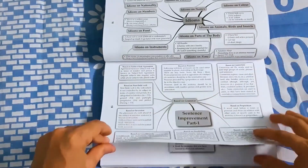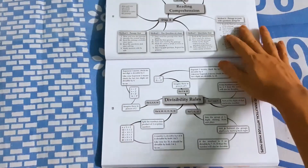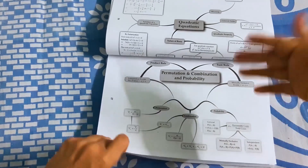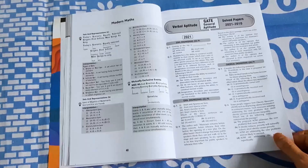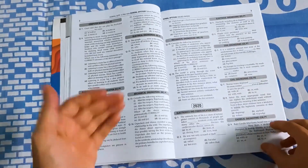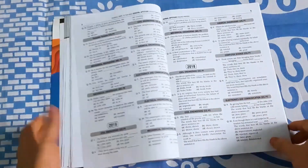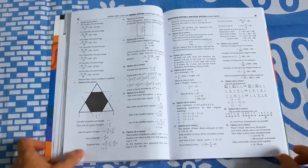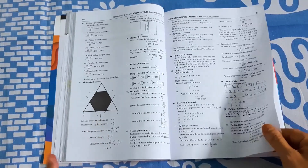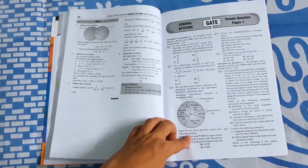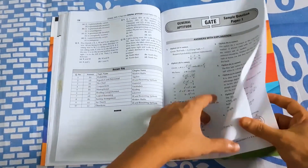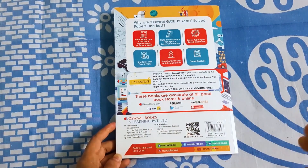The book also covers quantitative and analytical aptitude — divisibility rules, mathematical formulas — and all previous year questions for all branches like civil engineering, electronics, and computer science, spanning 12 years from 2010 to 2021. The solutions and explanations are very thorough. All links are in the description — if you want to purchase the book, click the link.